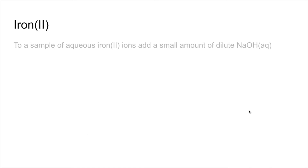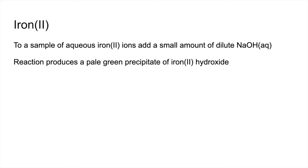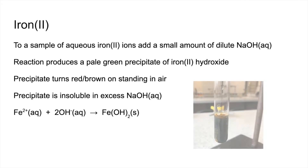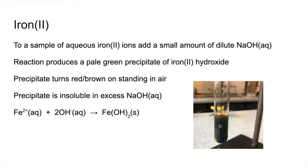Iron-2 now — almost identical to the previous ones. We get a pale green precipitate of iron-2 hydroxide, which turns red-brown on standing in air and is insoluble in excess sodium hydroxide. You can make out the green colour and clearly see the red-brown colour from the oxidation of iron-2 up to iron-3.